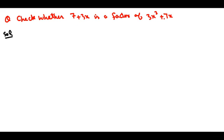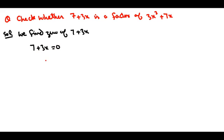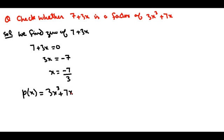First, what we do — we find the zero of this divisor, 7 plus 3x. So 7 plus 3x equals 0, which gives 3x equals minus 7, so x equals minus 7 upon 3. Now we write the polynomial: p of x equals 3x cube plus 7x.